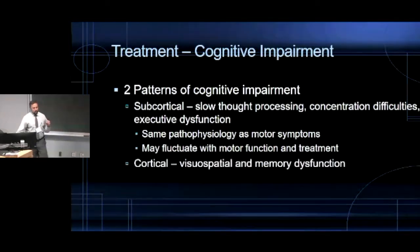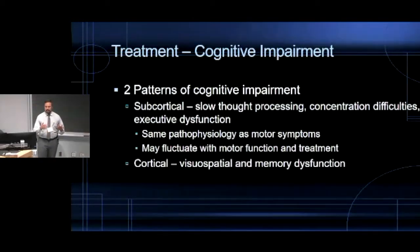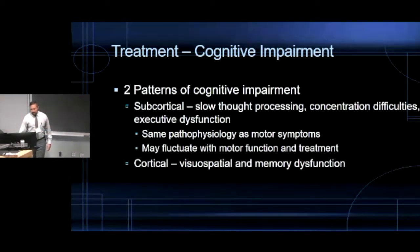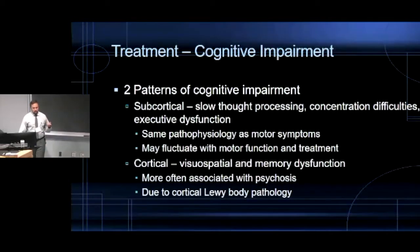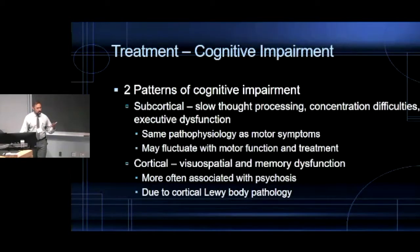The cortical pattern has prominent visual-spatial and memory dysfunctions, in many respects similar to Alzheimer's disease but often with more prominent visual-spatial difficulties — patients bump into things. These patients score 28 on the MMSE but really bomb on the intersecting pentagons or give a really weird clock. The cortical cognitive symptoms are due to Lewy bodies being in the cortex in later stages. They are often more associated with psychosis, and patients with memory and visual-spatial problems are more likely to develop hallucinations and paranoia.